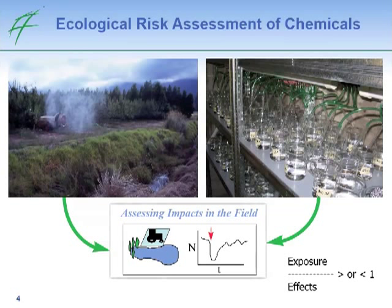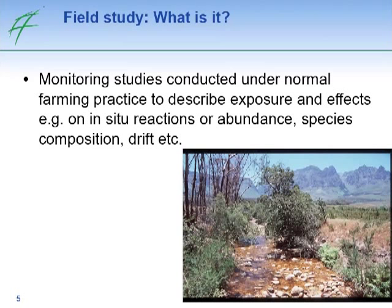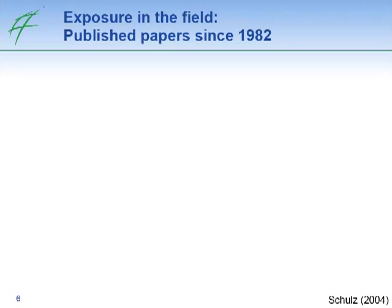Here you can see the exposure characterization and the effect characterization as a typical example. If you look at effects from a field perspective — a retrospective approach — in comparison to the prospective approach which predicts potential pesticide effects, a retrospective approach surveys potential pesticide effects in the field. You usually focus on so-called field studies, which are monitoring studies conducted under normal farming practice to describe exposure and effects on various response variables.